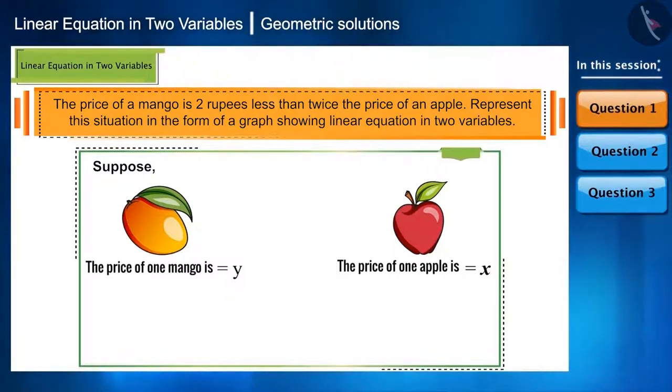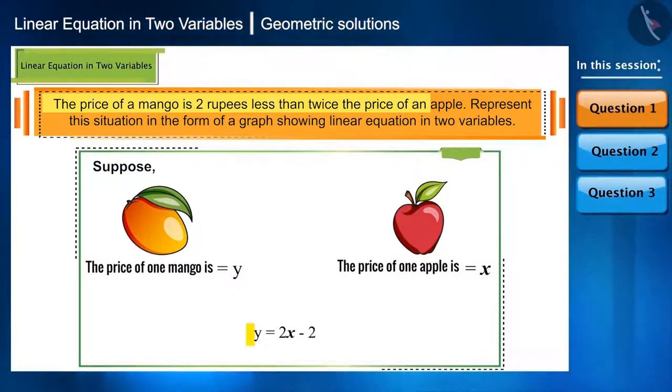Now, according to the condition, we will form an equation. The condition is that the price of one mango that is y is 2 less than twice the price of one apple. y is 2 less than 2x, that is y is equal to 2x minus 2. The equation is ready.